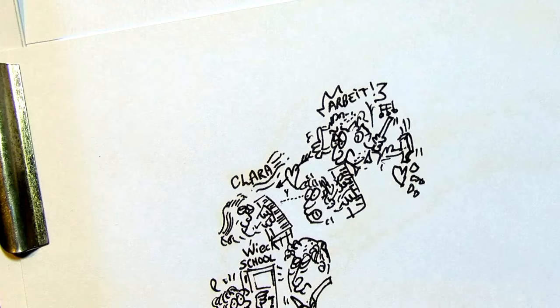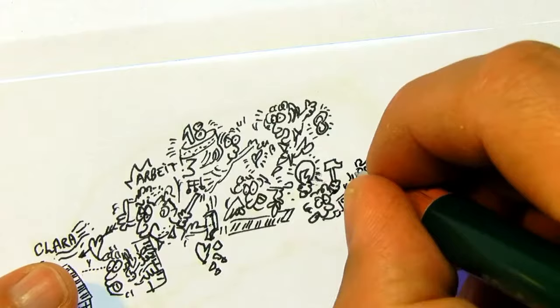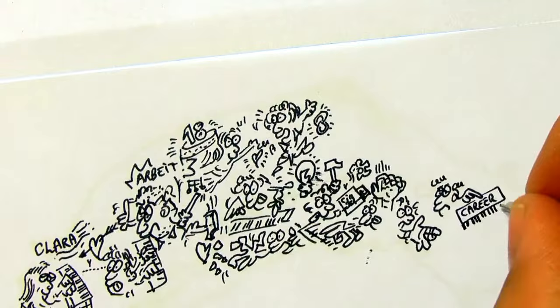Mr. Vic was opposed to the relationship, but they got married when she attained her legal age. Robert wanted a career as a virtuoso concert pianist. He decided to train his fingers hard with a homemade device based on a cigar box.